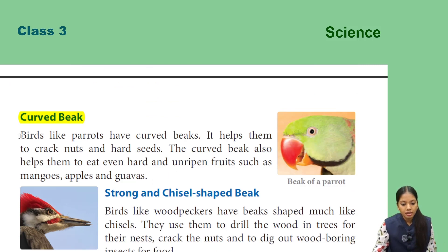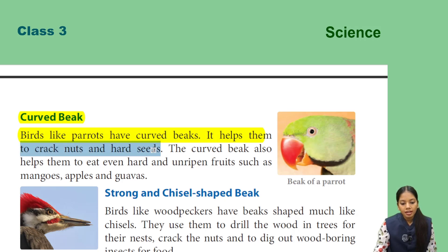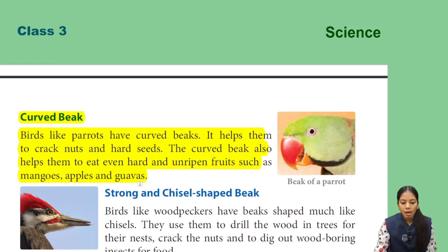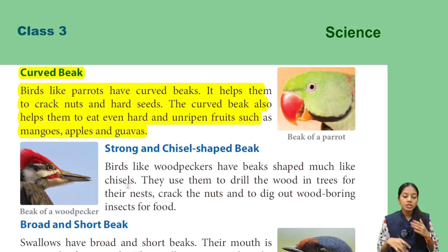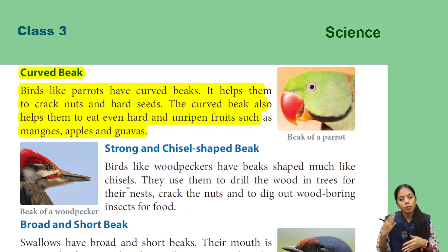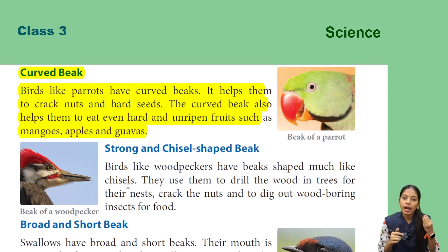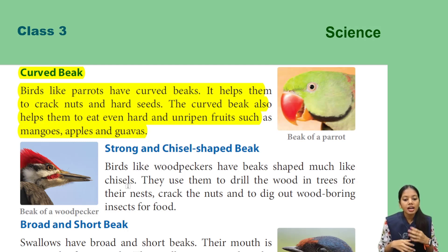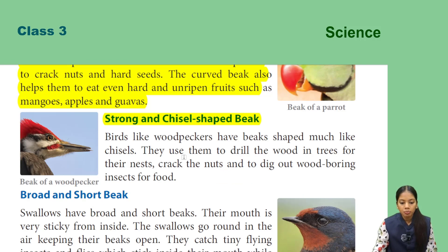Next is the curved beak. Birds like parrots have curved beaks, which help them to crack nuts and hard seeds. The curved beak also helps them to eat hard and unripened fruits such as mangoes, apples, and guavas. So parrots have curved beaks that help crack nuts, hard seeds, and even unripened fruits.